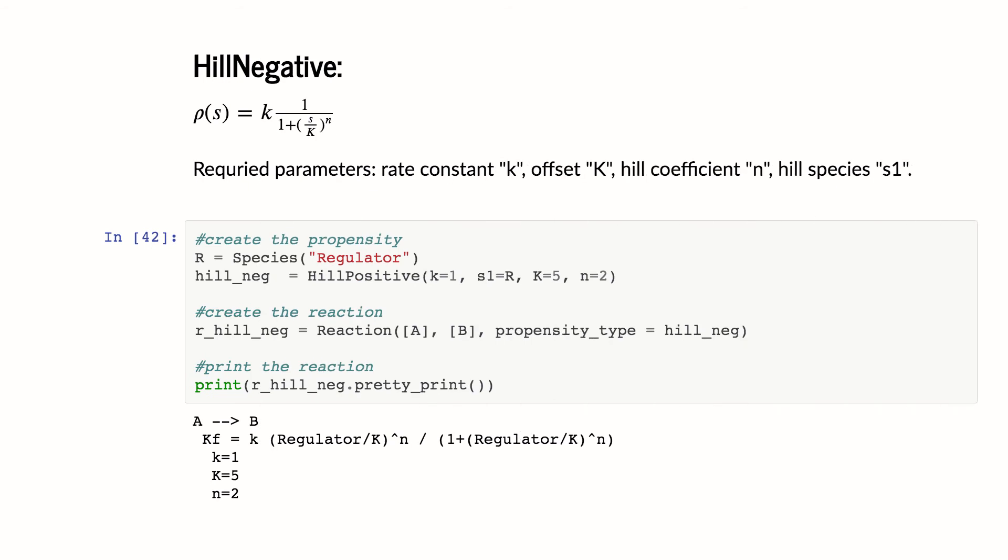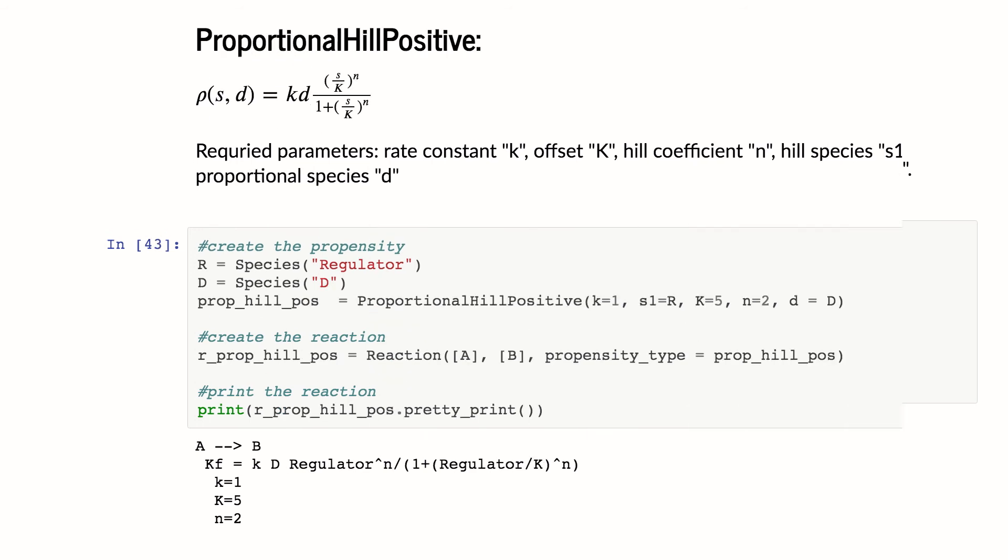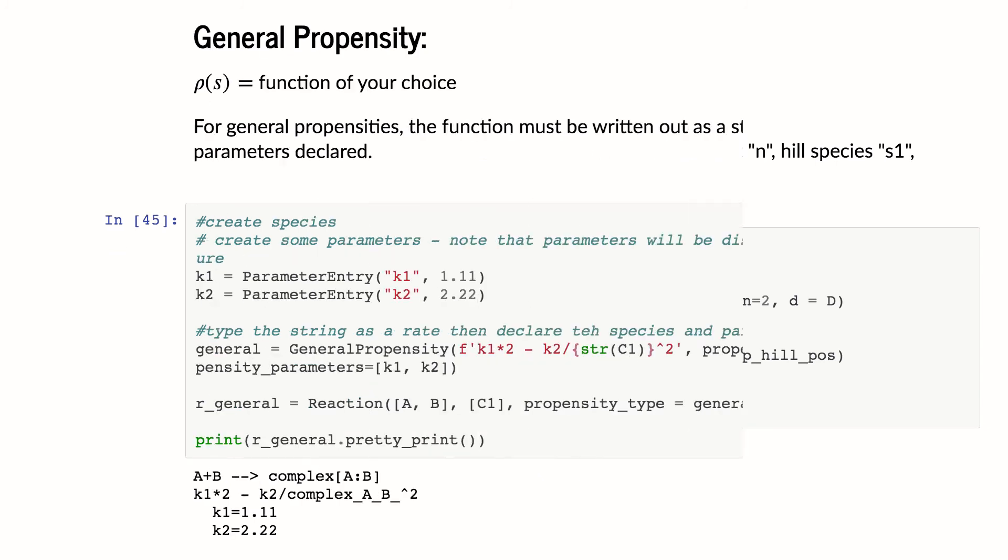I can do the same thing with hill negative. And it's exactly the same. But here I'm making, oh, it says hill positive here. Oops, typo. This should say hill negative. But it would be the same way. Proportional hill positive, et cetera.